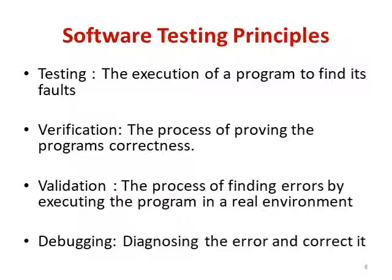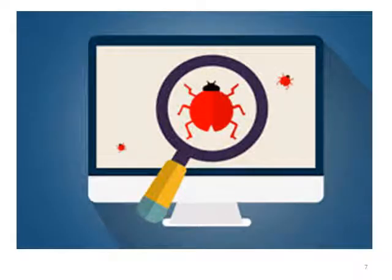The execution of the program to find its faults is testing. The process of proving program correctness is verification. The process of finding errors by executing the program in a real environment is validation. Diagnosing the error and correcting it is debugging.